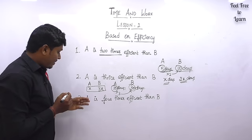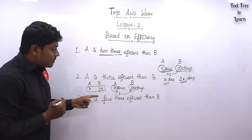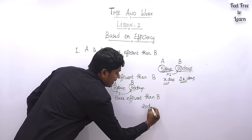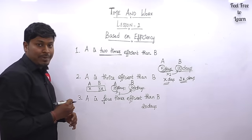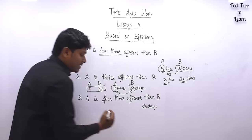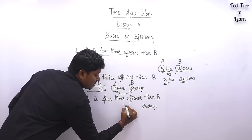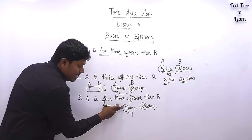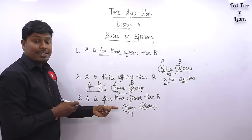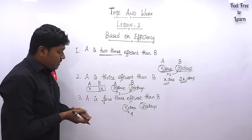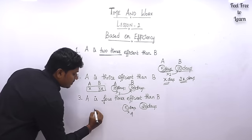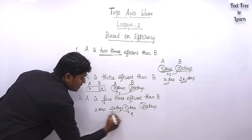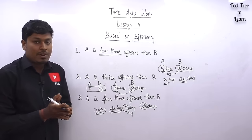Point number three: A is four times efficient than B. For example, if B completes a task in 20 days, then A takes 5 days, because 5 into 4 equals 20. In terms of x: A completes a task in x days, and B completes a task in 4x days, because A is four times efficient than B.